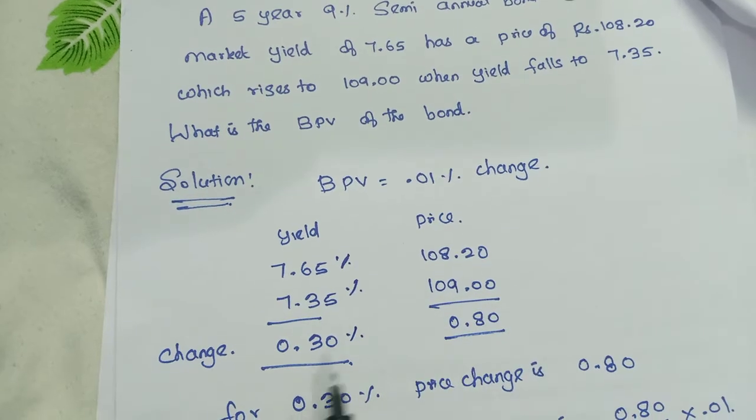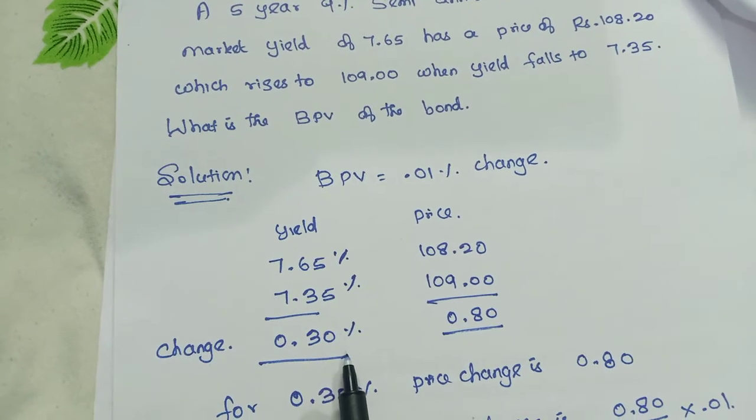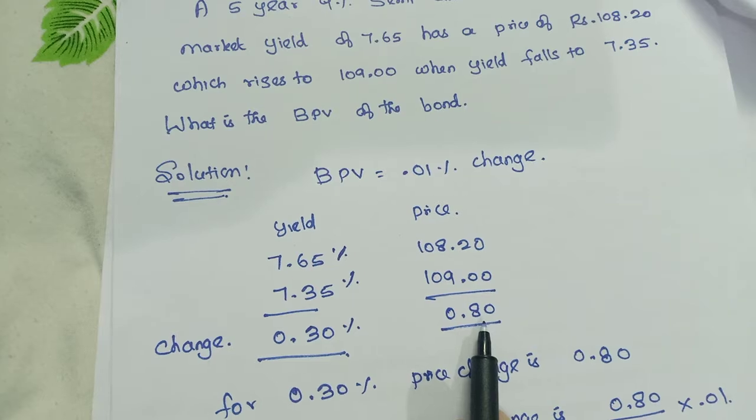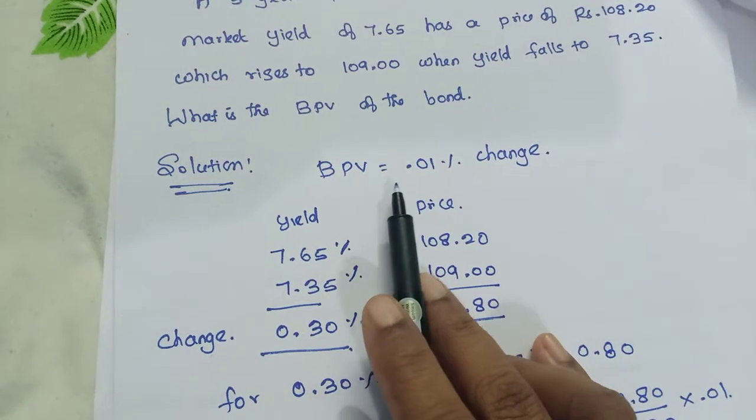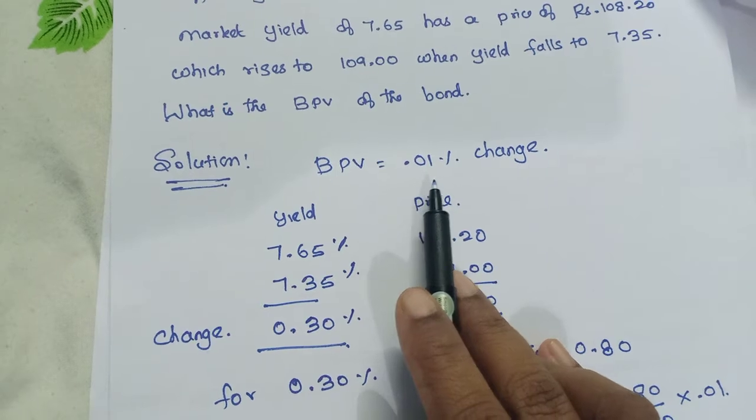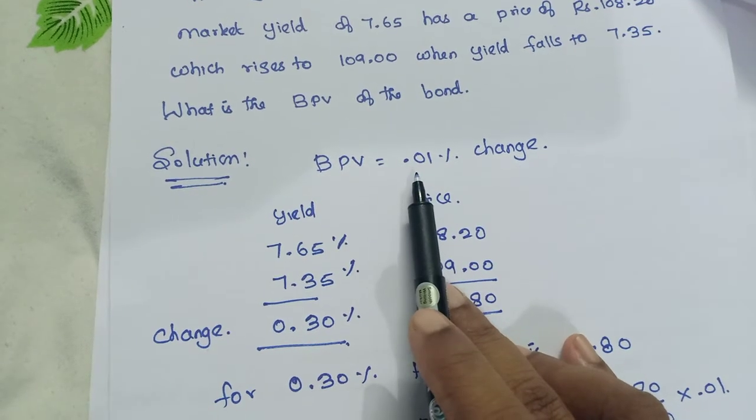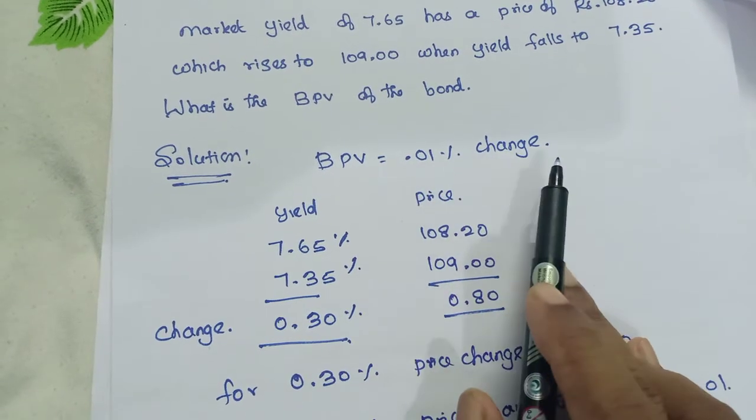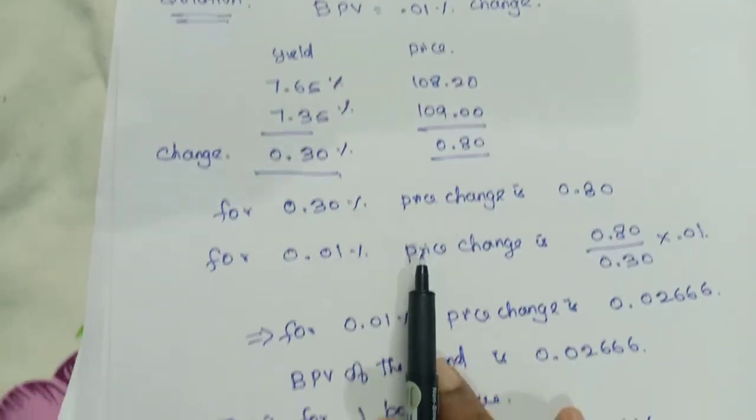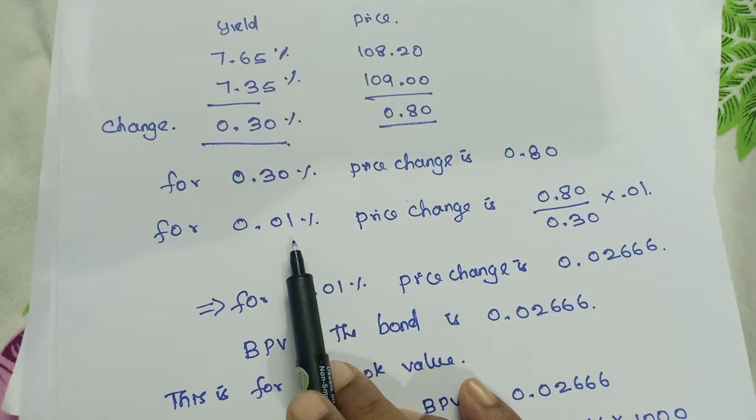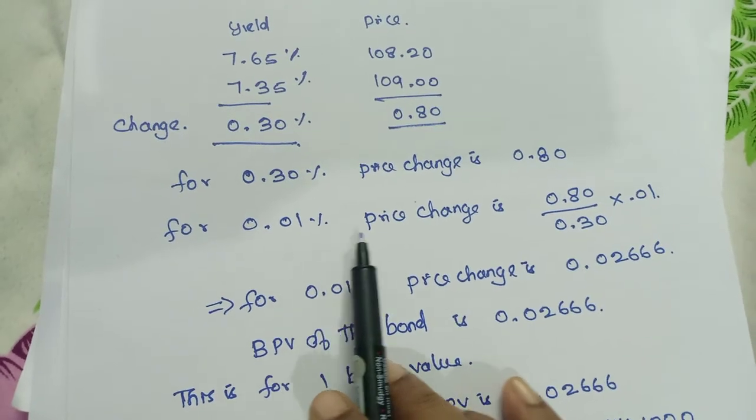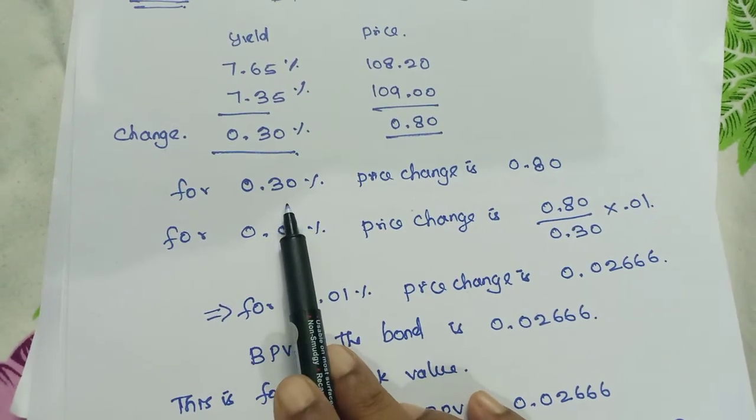Here the yield is all in percentage. For 0.3 percentage, the change in price, the change in price is 0.8. For Basis Point Value we have to find the change in price for 0.01 percentage. So I just want to get the value for 0.01 percentage.